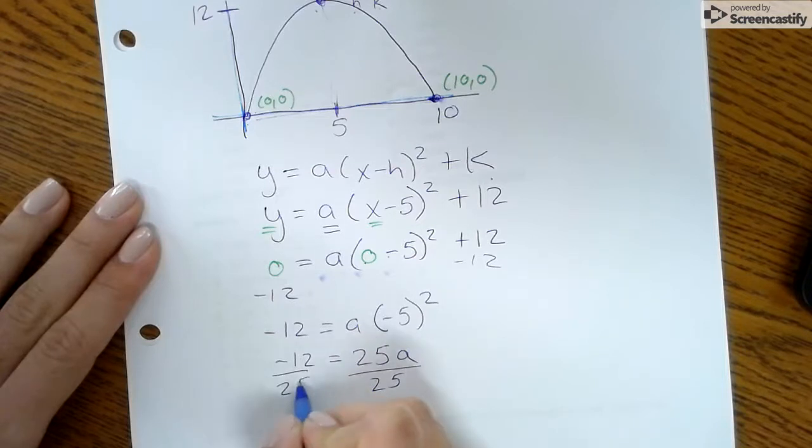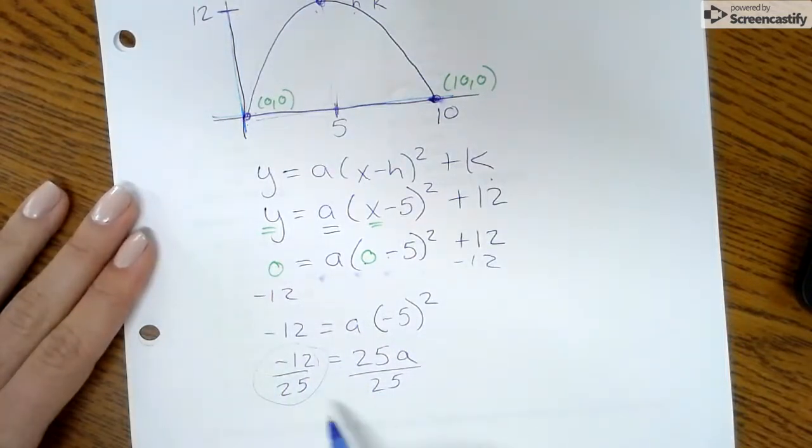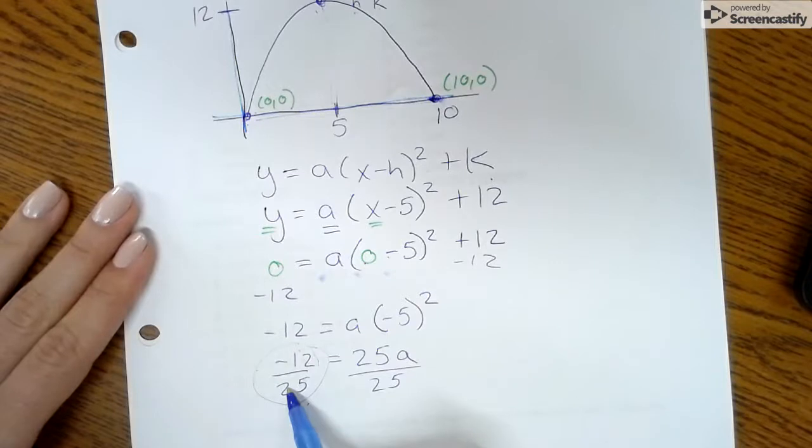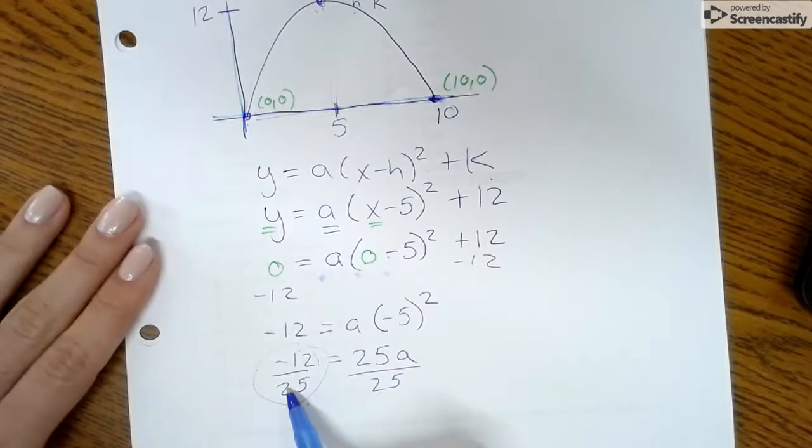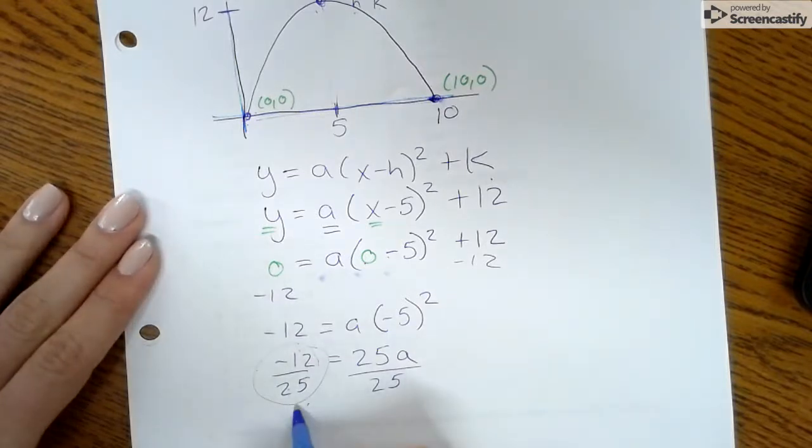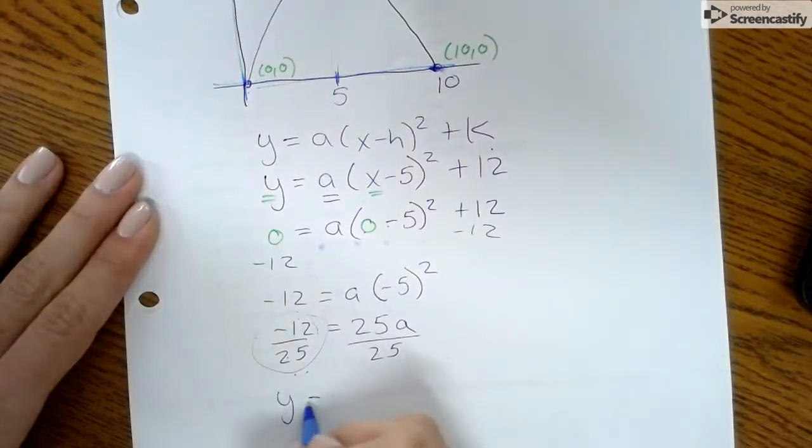So this is where I'm at now. I have to square -5, which is 25, and then the last step is divide by 25 to get a alone. If you can reduce this, go ahead, but -12 and 25 you can't reduce any further. So that is my a value. So your final answer is y equals -12/25.